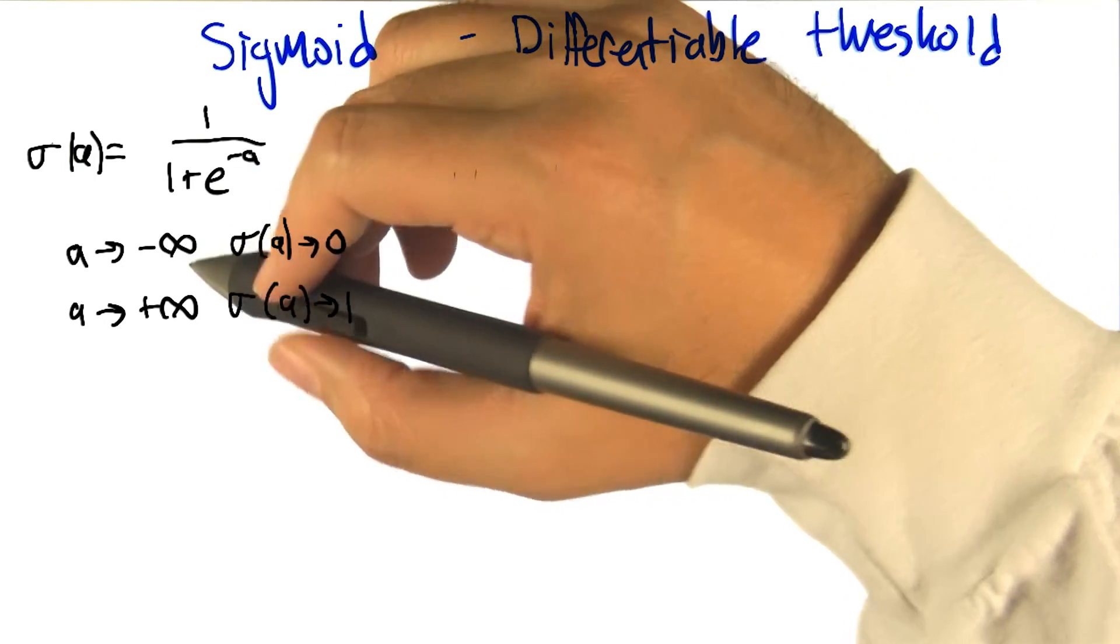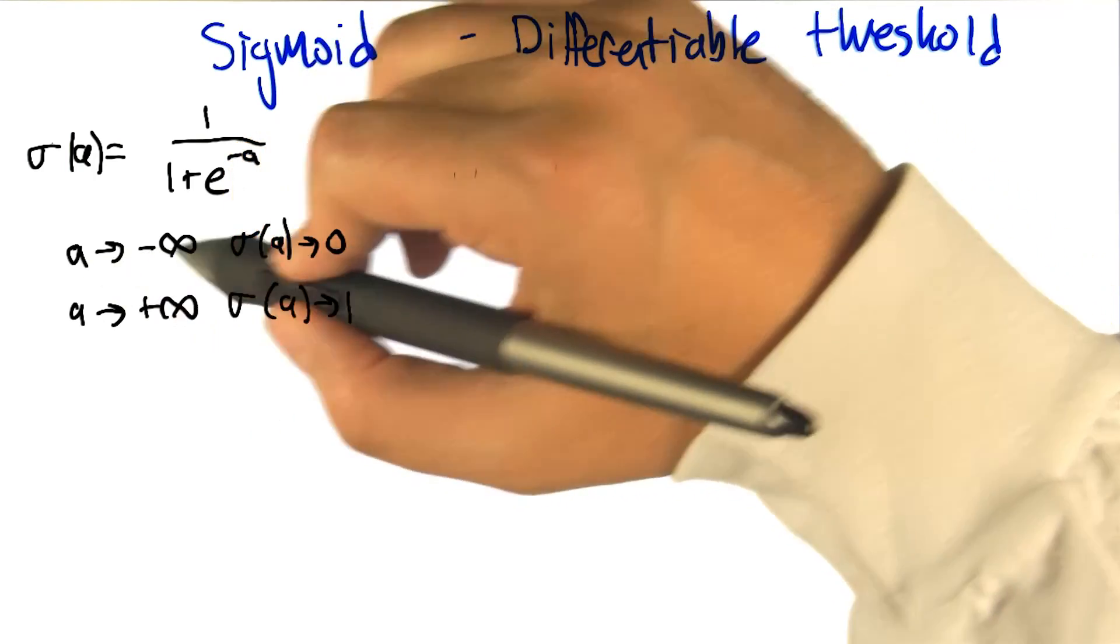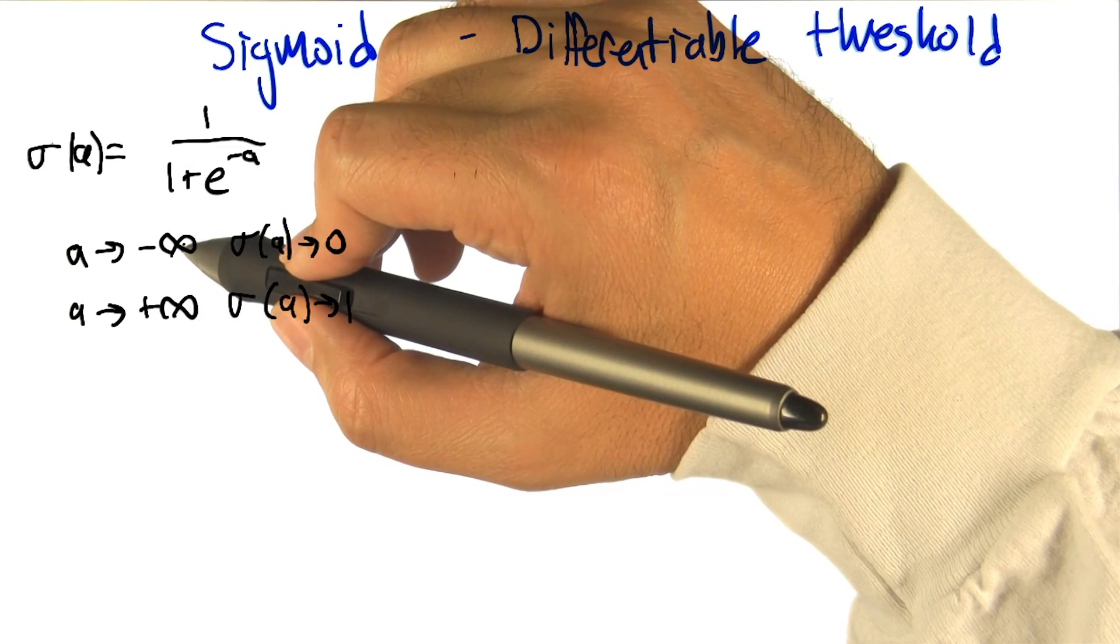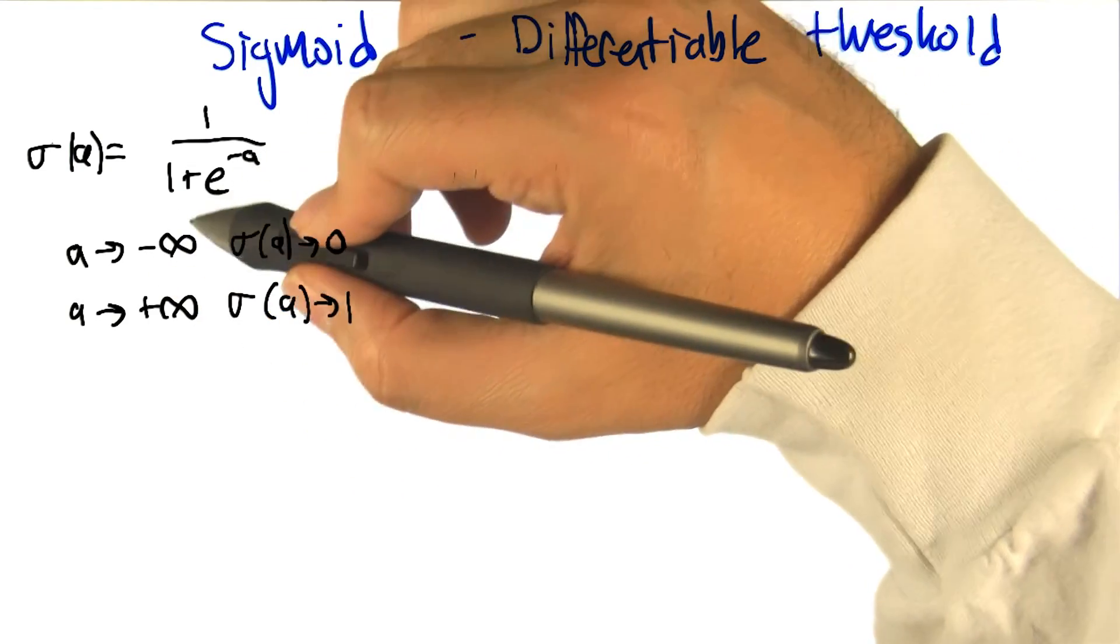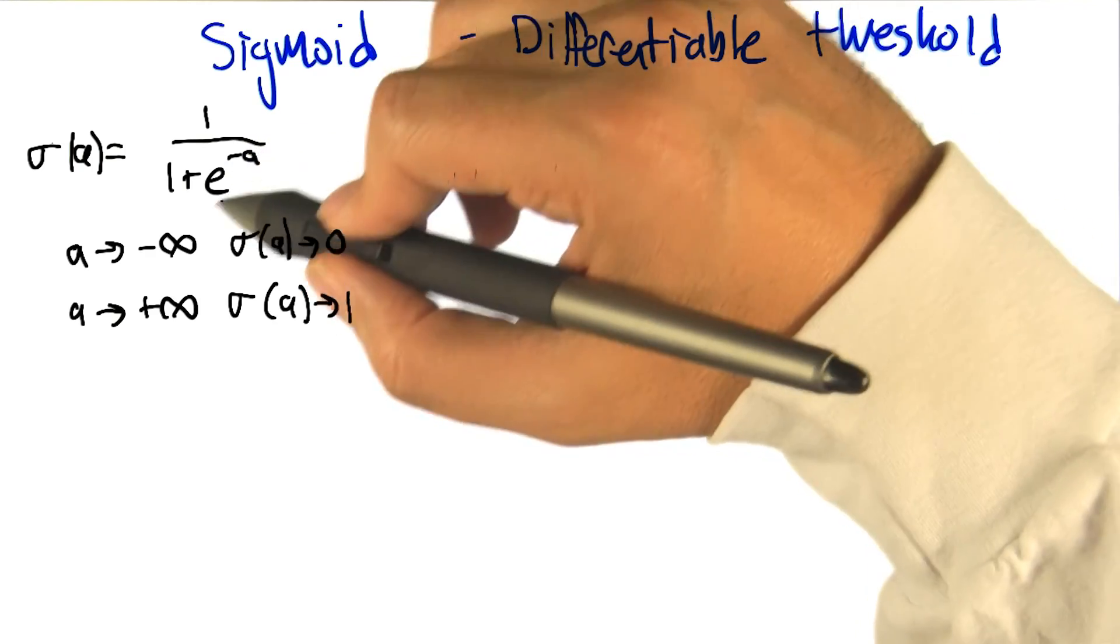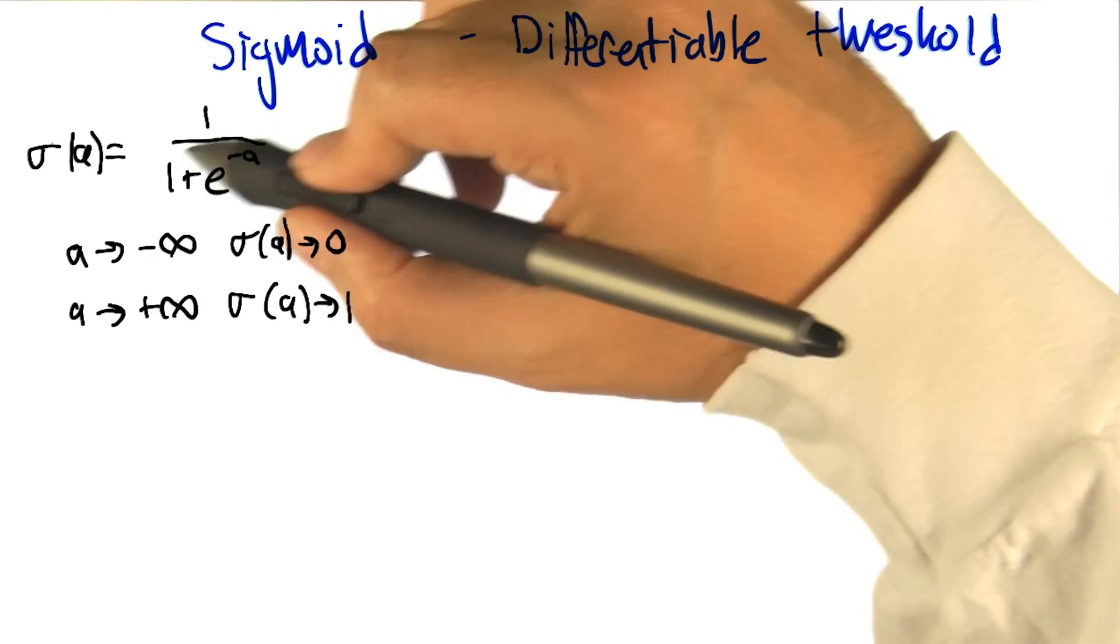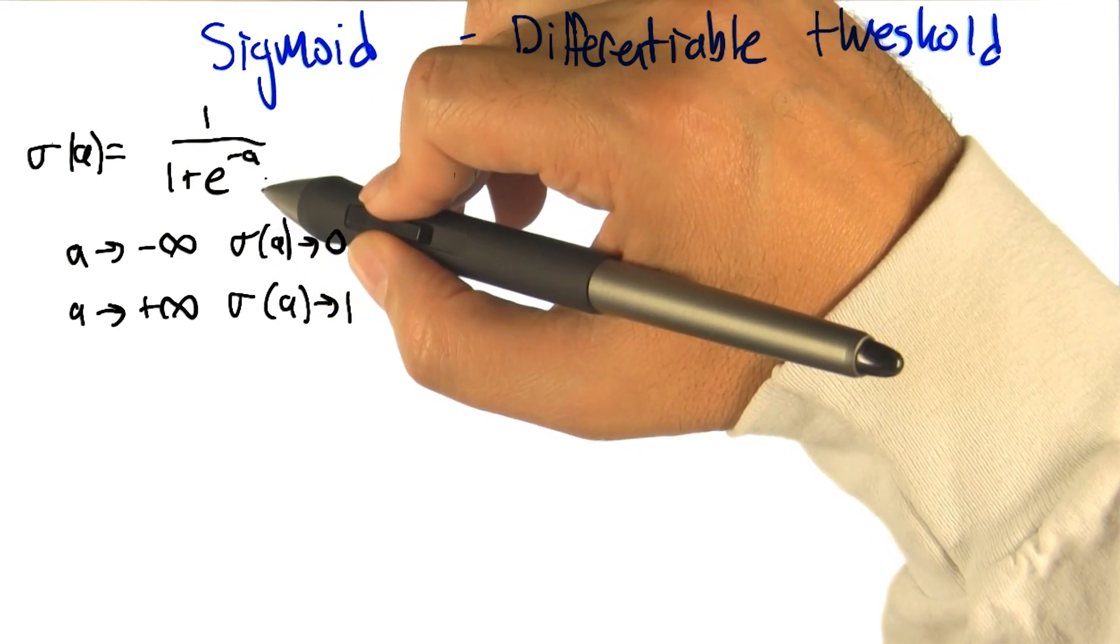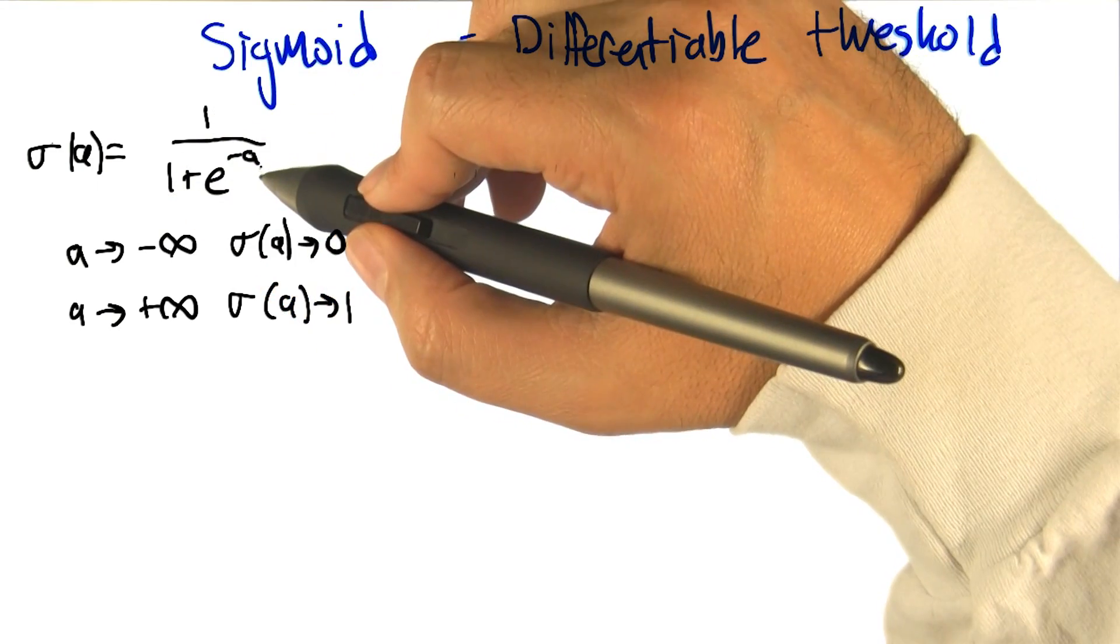And what do we know about this function? Well, it ought to be clear that as the activation gets less and less, we'd want it to go to zero, and in fact it does. So as a goes to negative infinity, the negative a goes to infinity, e to the infinity is something really big. So it's one over one plus something really big, which is like one over something huge, which is almost zero.